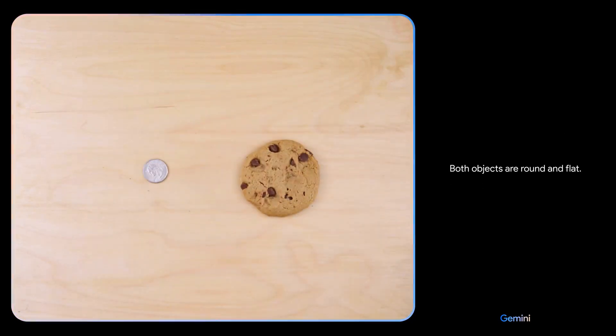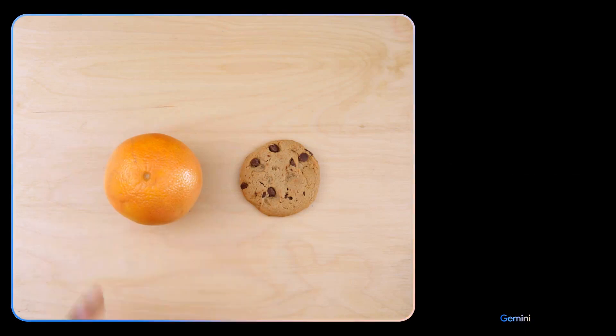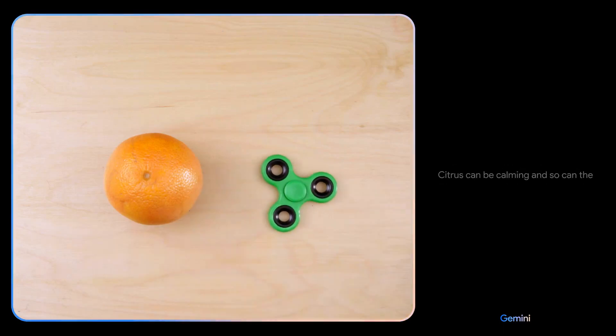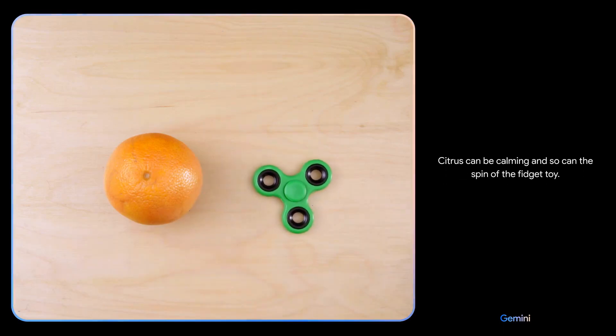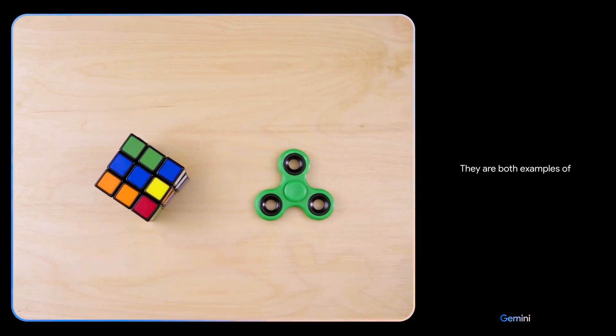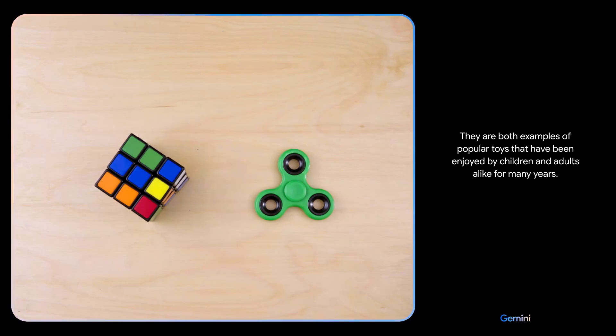Both objects are round and flat. There you go. Both are food. The orange is a healthier choice than the cookie. Citrus can be calming and so can the spin of the fidget toy. They are both examples of popular toys that have been enjoyed by children and adults alike for many years.